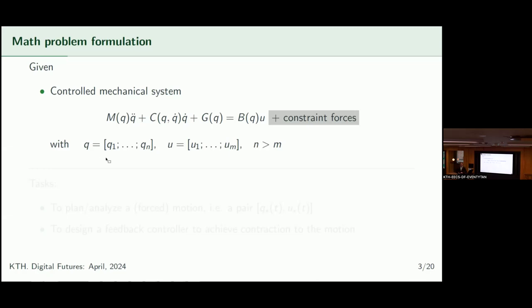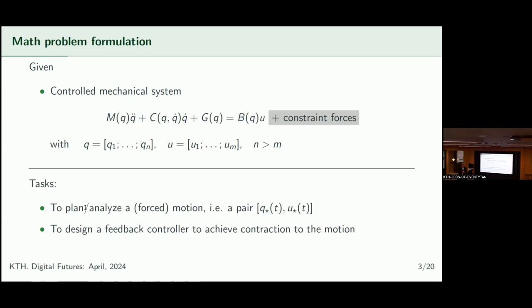If I try to use a rigid-body model, I should be frozen, because liquids shouldn't be moving inside of me. So this model is conceptually very different from what we observe in a human being. The typical task would be to plan or analyze such forced motion and design control to make it insensitive and reproducible. The standard concept of asymptotic stability is largely modified here because the motion exists for only half a second, so reproduction must be formulated for a process that does not exist forever.